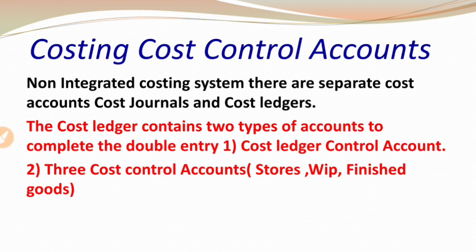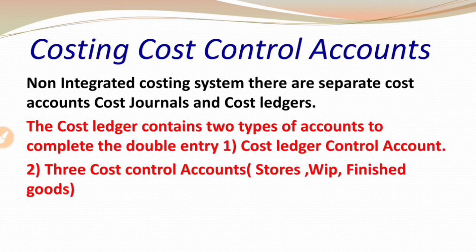Today's revision series is related to a very important chapter from costing called cost control account, also represented by the term non-integrated system. Many students are confused by this chapter because there are 27 to 28 journal entries in both the financial account and the cost account. This chapter is going to come in your exam for overall 15 marks.